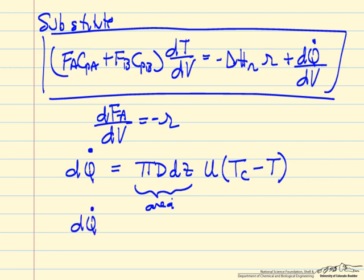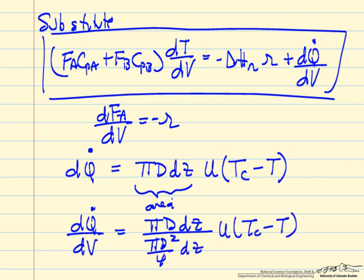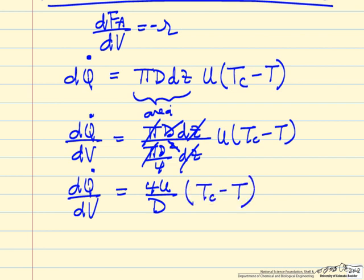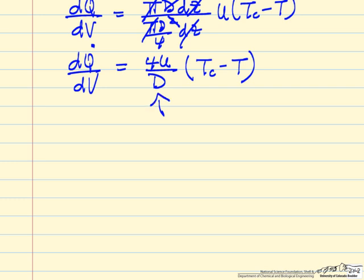And now in the energy balance, we have dQ/dV, which is the volume, pi d squared over 4 times dz. So the term dQ/dV is 4U over d. U is the heat transfer coefficient, d is the diameter, tc is the external cooling temperature. And so in general, this is the heat transfer area per volume.